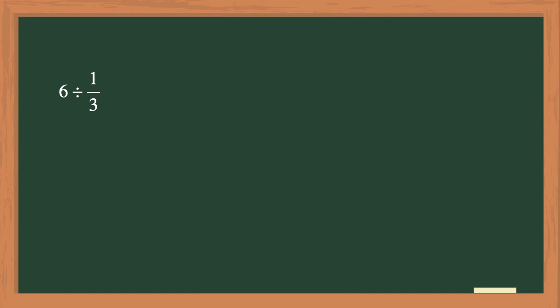So looking at this whole number of 6, you will need to rewrite it as an equivalent fraction by placing the 6 in the numerator and a 1 in the denominator. Now that both of the numbers are fractions, you can begin the division process.